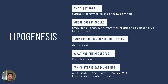Lipogenesis specifically creates palmitic acid in human or mammalian cells. It occurs in the cytosol of many different cells — for example, liver cells, kidney, brain, lung, mammary gland (for example, in the creation of milk for a newborn), and in adipose tissue.